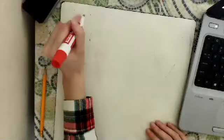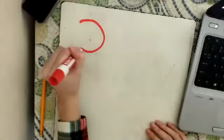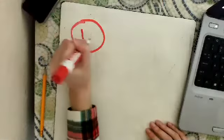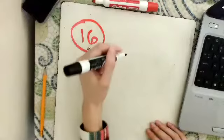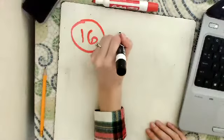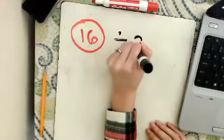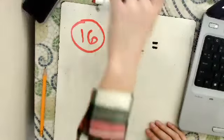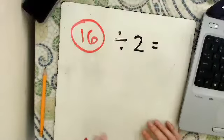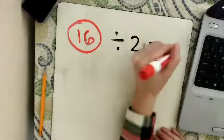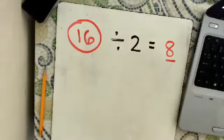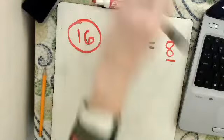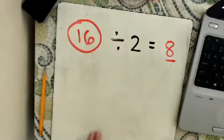If you remember from yesterday, we put the target perimeter in a circle, then we divide that number by 2. What's that going to be, 16 divided by 2? 8. Then we find all the sets of numbers that add up to 8 and those are going to be the side lengths of our rectangle.